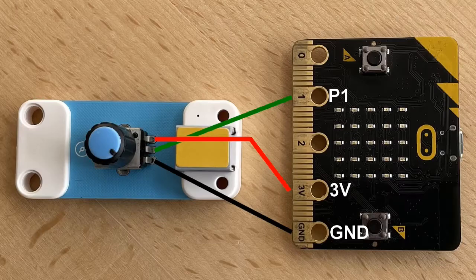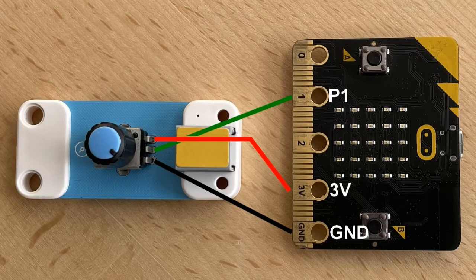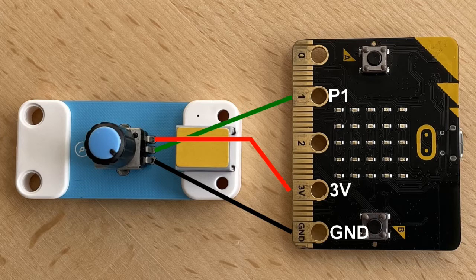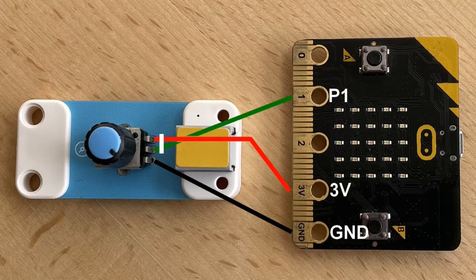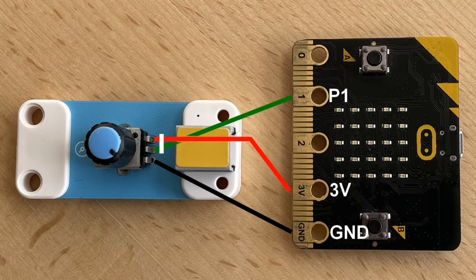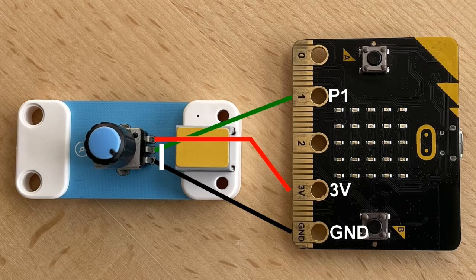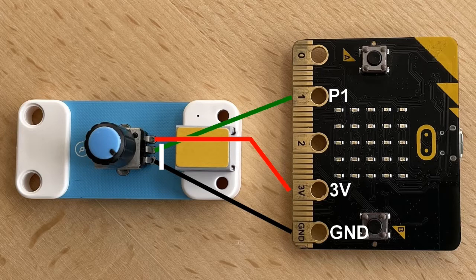The potentiometer has three legs which inside the board are connected to the microbit like this. When turning one way on the potentiometer, P1 on the microbit is connected to 3 volts. If you turn the other way, P1 is connected to ground. If it is in the middle position, P1 will have a voltage of 1.5 volts and so on.